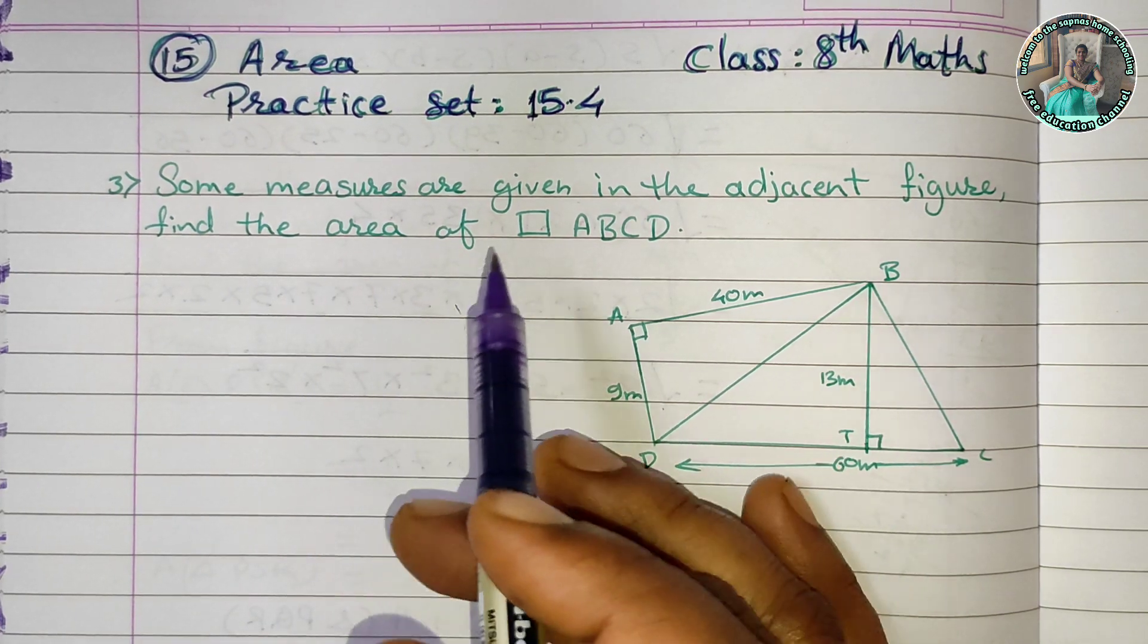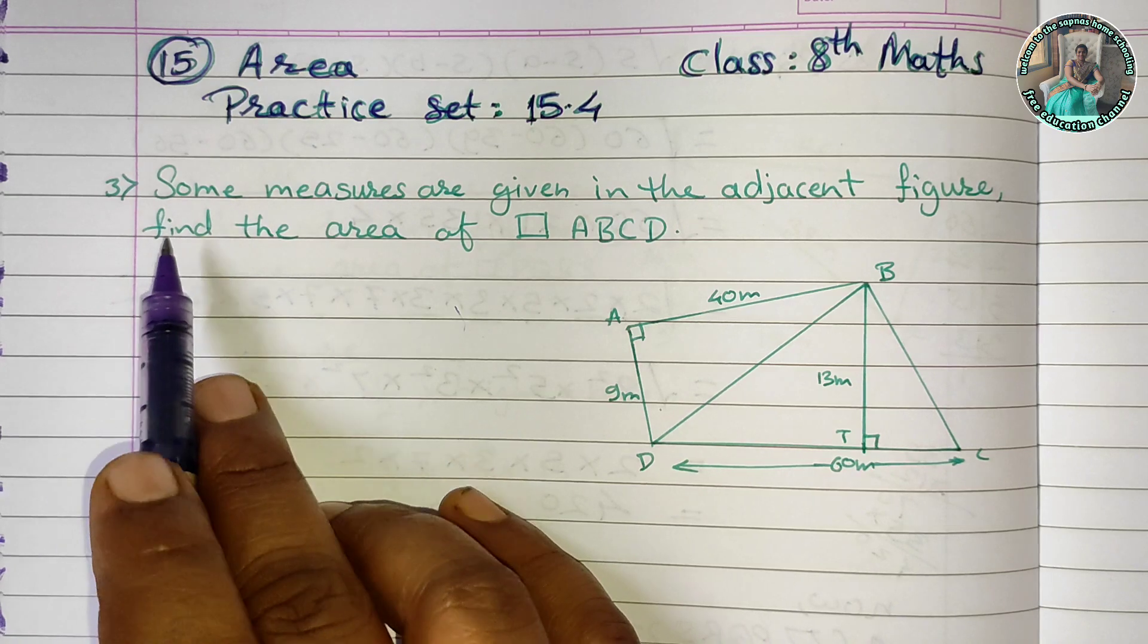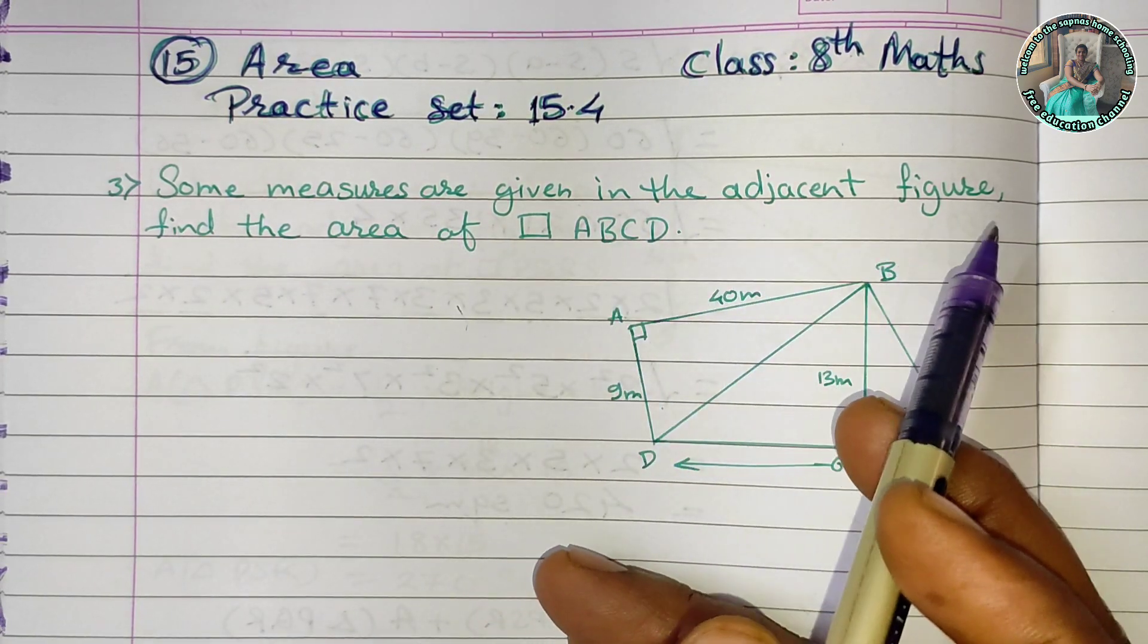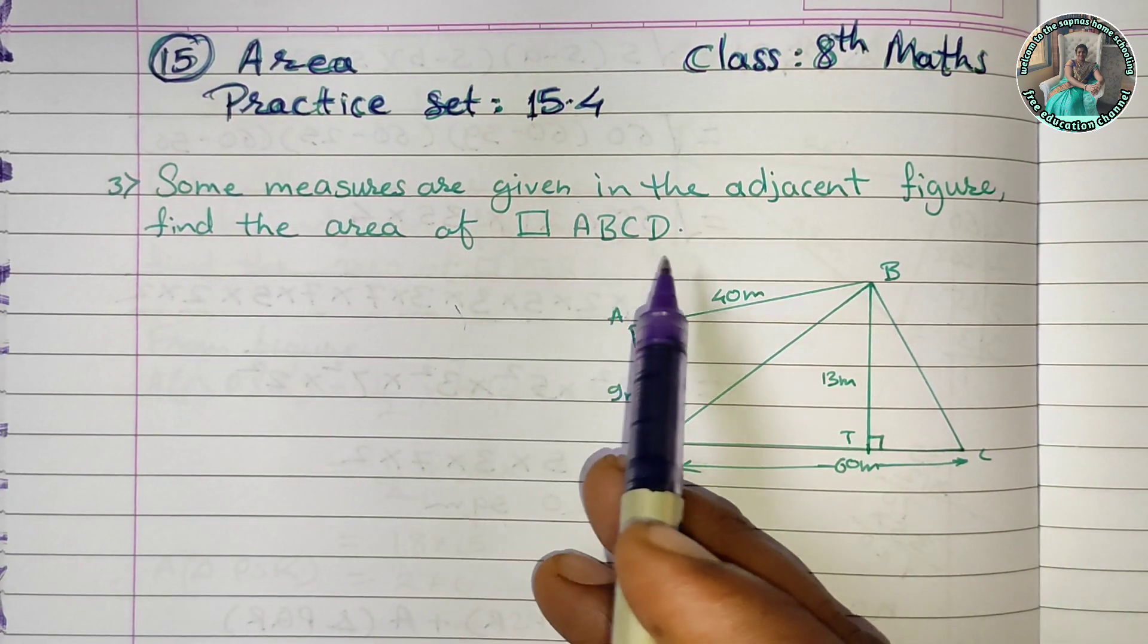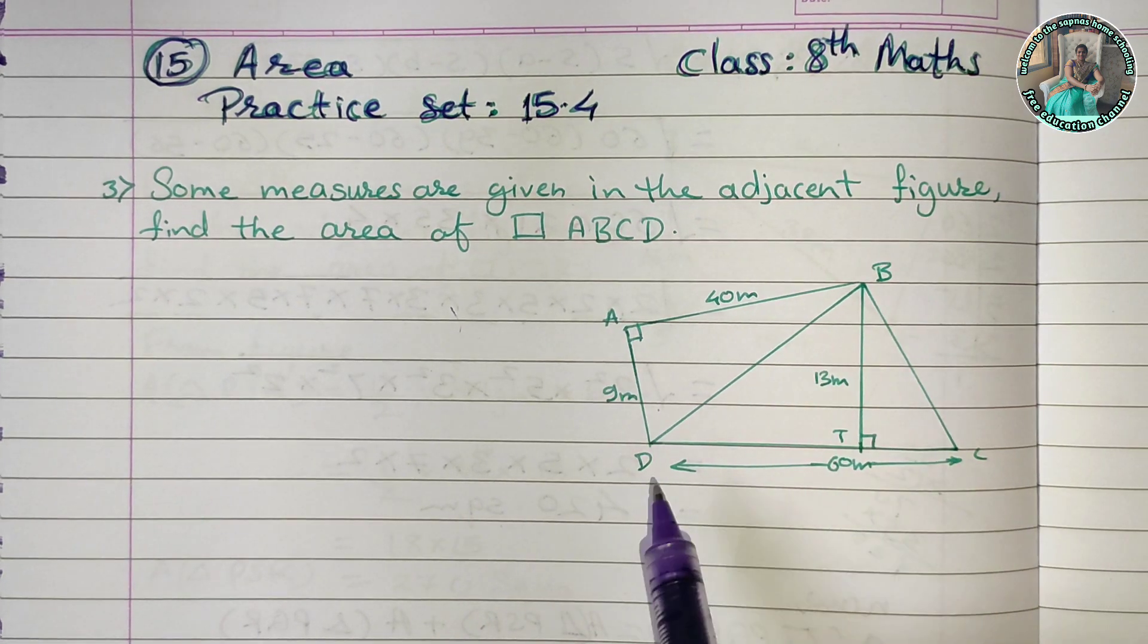The question is easy. Some measures are given in the adjacent figure. Find the area of quadrilateral ABCD.